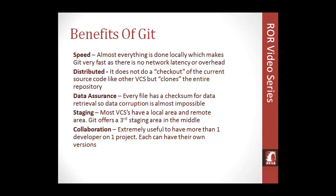Another benefit of Git is that it's distributed. Unlike standard VCS, it doesn't just do a checkout of source code from the server — it clones the entire repository onto any system connected to the project. So even with a centralized workflow, every developer has a backup of the entire server on their local machine, making it virtually impossible to lose everything. Data assurance is another big benefit: Git uses a data model with checksums for every file, ensuring what you upload is exactly what you get back with no data corruption.